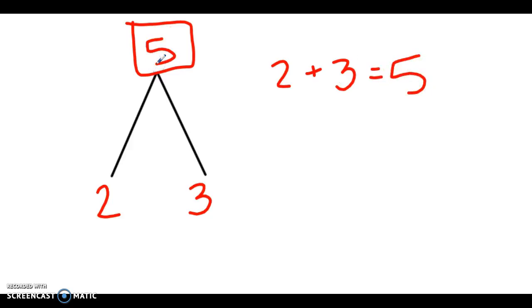Now after we have that answer underneath they would like us to write two different equations. Now there are four to choose from just like when we saw the last example with the fact family. We could do 2 plus 3 equals 5.